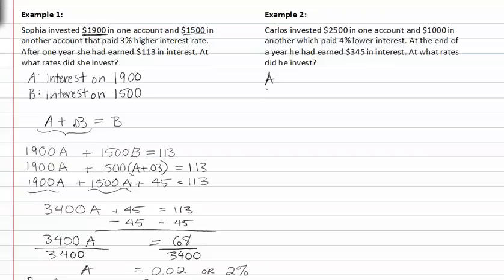Again, we'll call A and B the two different interests. If he invests a certain amount at an interest rate, we'll call A the value of the investment of $2500, and B will be the interest rate of the $1,000.